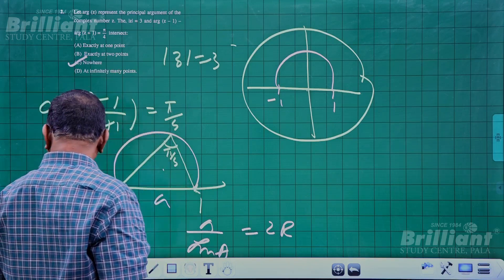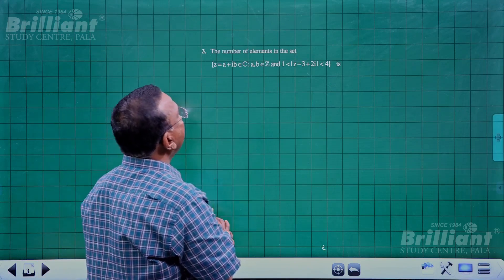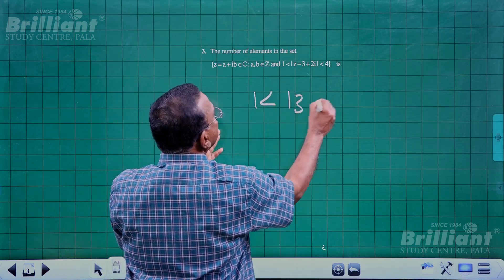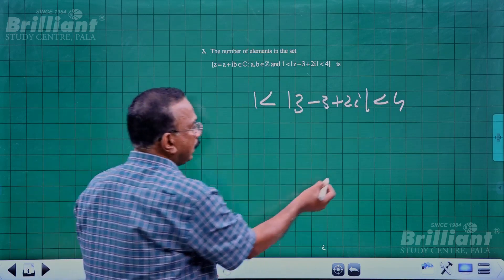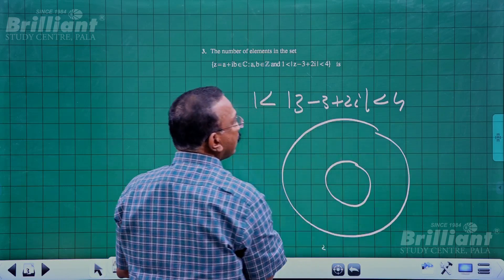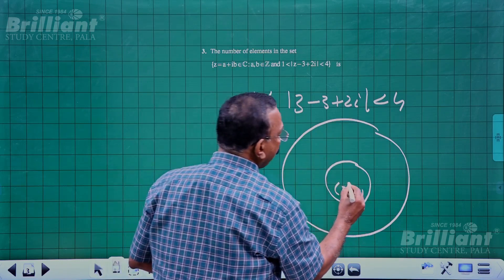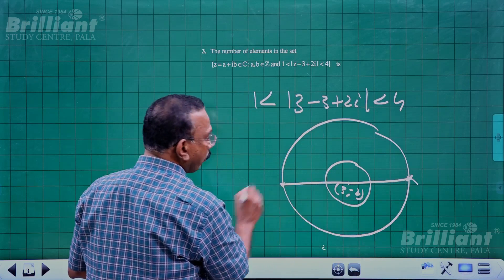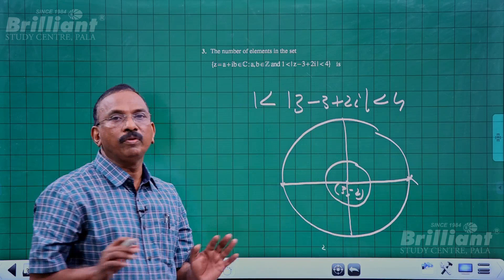Question 3 asks for the number of integer-coordinate elements in the annular region 1 < |z - (3 - 2i)| < 4. One circle is inside with radius 1 and another is outside with radius 4. The center is at (3, -2). We draw the region and find the bounding square for radius 4.